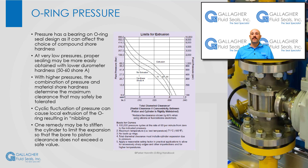Pressure has a bearing on O-ring seal design as it can affect the choice of elastomer hardness. At very low pressures, proper sealing may be more easily obtained with lower durometer hardness, such as 50-60 shore A. With higher pressures, the combination of pressure and material hardness determine the maximum clearance that may safely be tolerated. Cyclic fluctuation of pressure can cause local extrusion of the O-ring, resulting in nibbling, particularly if peak system pressures are high enough to cause expansion of the cylinder wall. One remedy may be to stiffen the cylinder to limit the expansion so that the bore to piston clearance does not exceed a safe value.